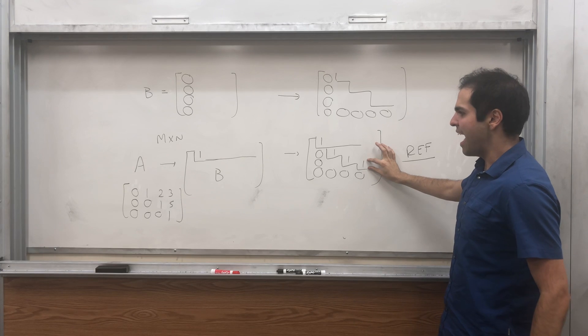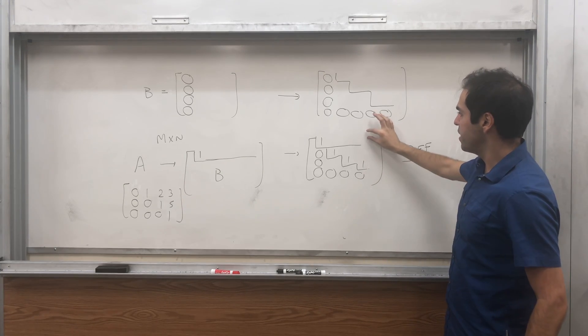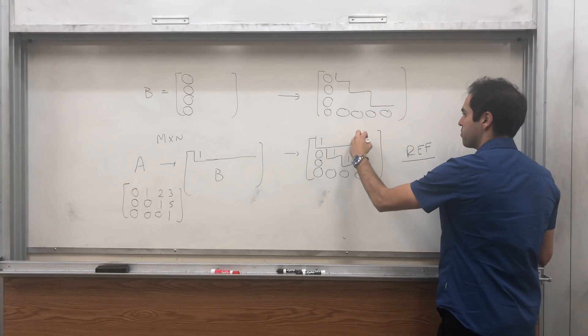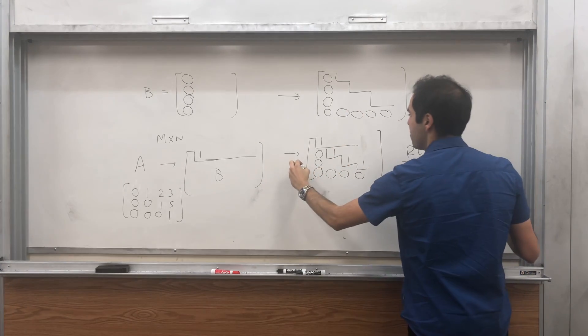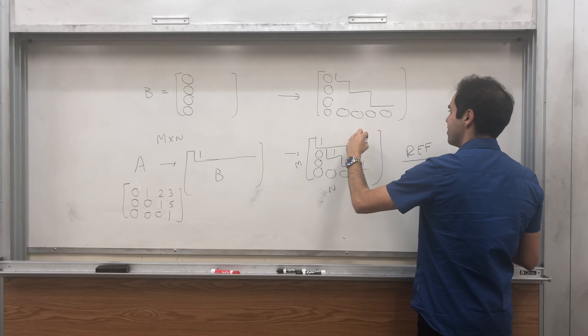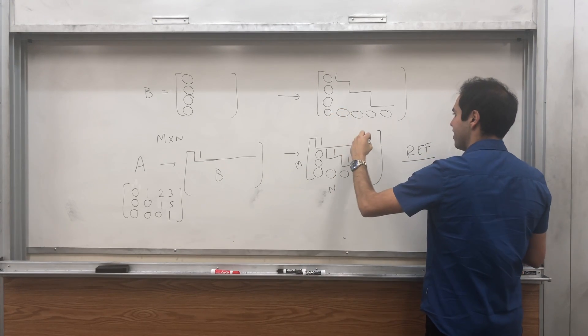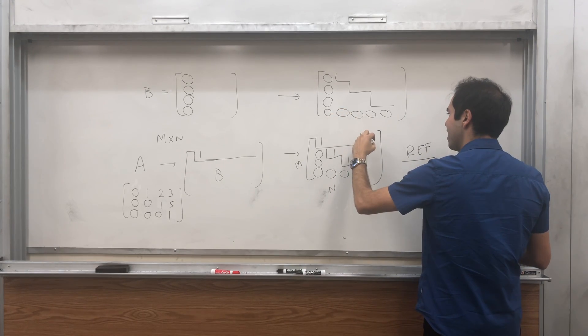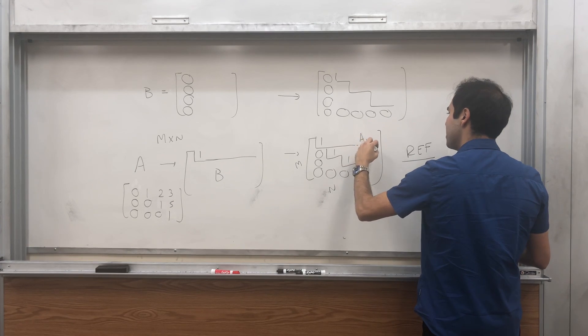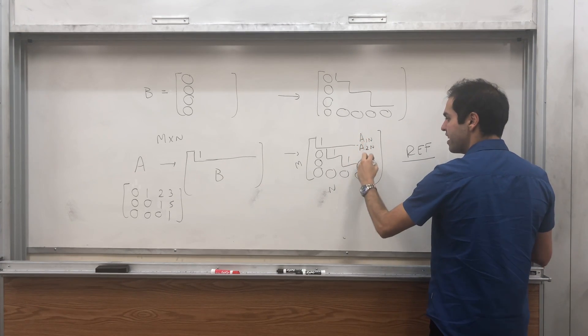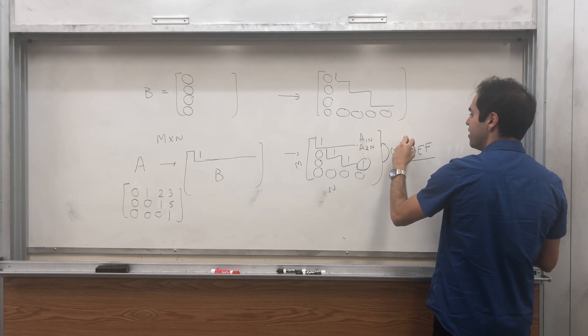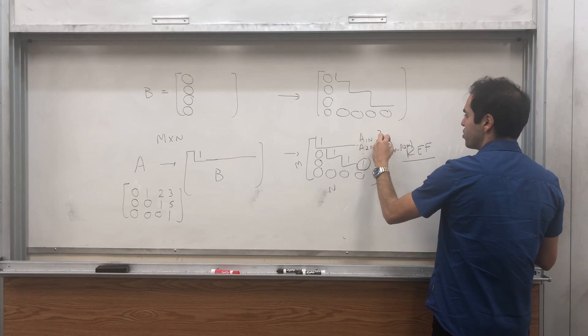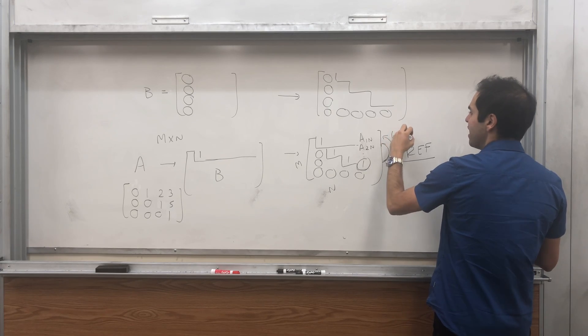First of all, this last column, you can just take every other entry, let's say here, let's say again, it's n by n now, and then this is, it's called a1n, a2n, dot, dot, dot.